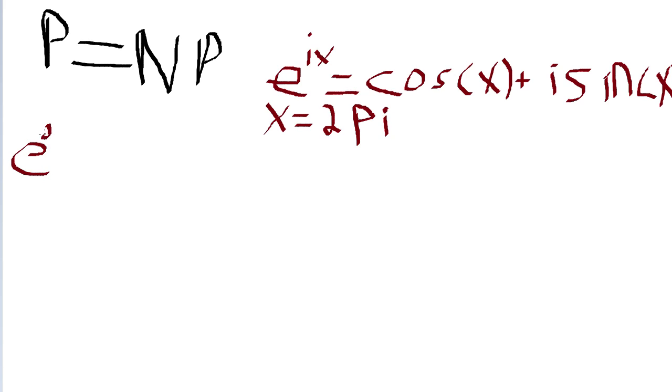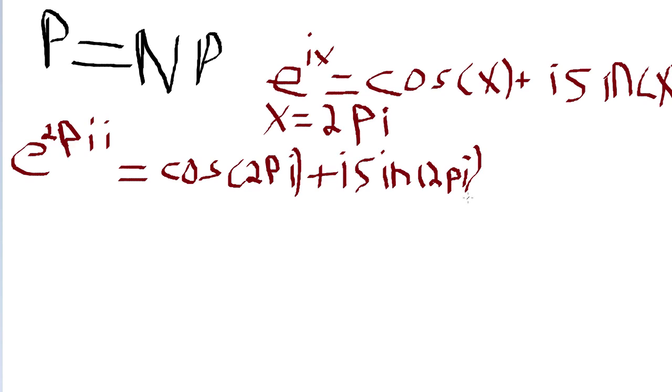E to the 2 pi times i is equal to cos of 2 pi, which is just equal to 1, plus i sine of 2 pi. And sine of 2 pi is just 0, so i sine of 2 pi would also be 0, which means that e to the 2 pi i is equal to 1.